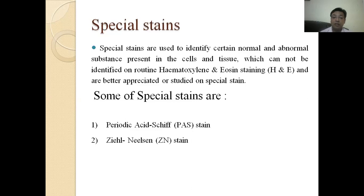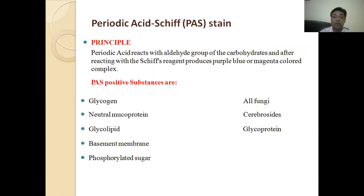The second one is Ziehl-Neelsen stain, also known as ZN staining method. Now first we will take Periodic Acid-Schiff stain. The principle is: periodic acid reacts with aldehyde groups of carbohydrates, and after reacting with Schiff reagent, these produce purple-blue or magenta colored complexes which can be seen under our microscope.